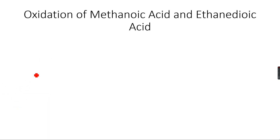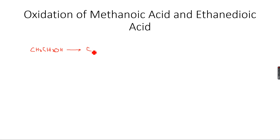Ethanol, CH₃CH₂OH, first oxidizes partially to ethanal, which is an aldehyde — CH₃CHO. This then further oxidizes to ethanoic acid, but we stopped the oxidation chain there.